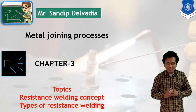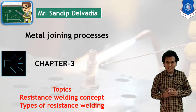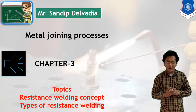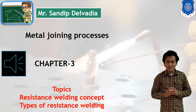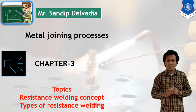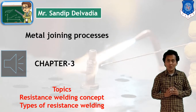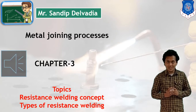Hello Students! In the Manufacturing Technology, we have started the Metal Joining Processes. Our chapter is Metal Joining Processes and in today's session, we are going to discuss one type of welding process, that is the Resistance Welding Process.